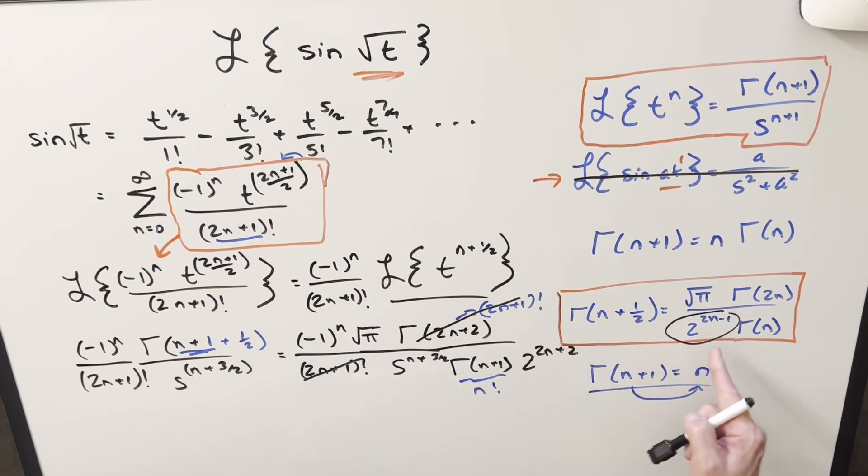And sorry, this is a mistake right here. Because if you plug in n plus 1 here, you actually get 2n plus 1, not 2n plus 2. You get 2n plus 2, but then you subtract 1 and you get back to 2n plus 1.